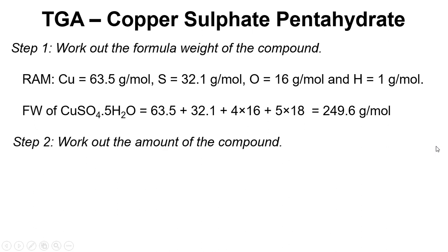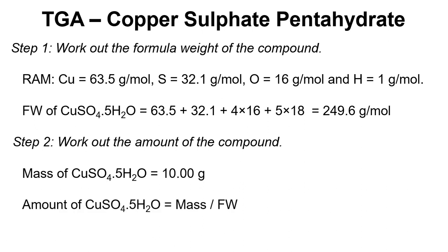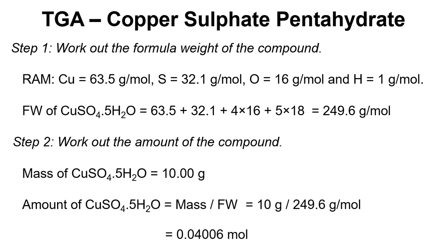The next step is to work out the amount of the compound. We know there is 10 grams, and the amount is the mass over the formula weight, so we can work that out to be 0.04006 moles.